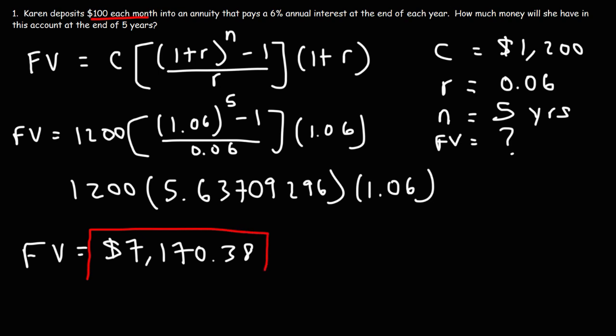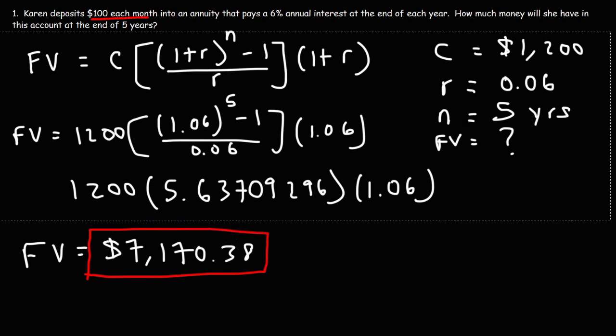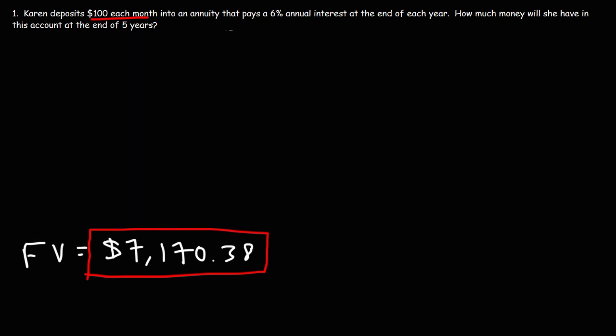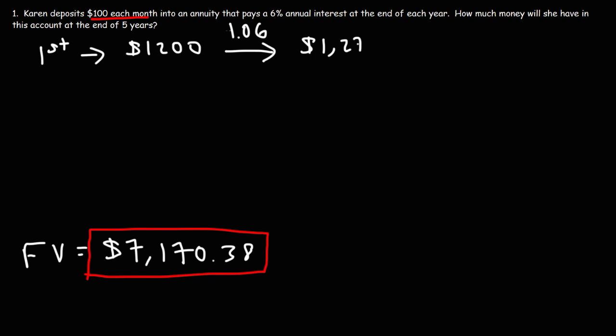That's how you calculate the future value of an annuity given monthly or annual deposits. Now let's find another way of getting the answer to build understanding. At the end of the first year Karen would have deposited $1,200 into the account, and then she receives six percent interest. Multiplying 1200 by 1.06, her account at the end of year one is $1,272.